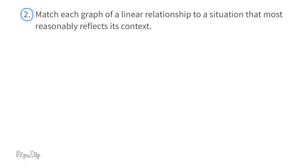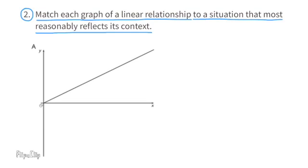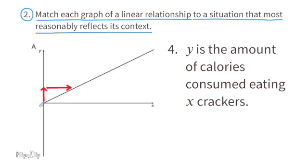Problem number two: match each graph of a linear relationship to a situation that most reasonably reflects its context. Graph A has a y-intercept at the origin and a positive slope. I'll match this with situation number four: y is the amount of calories consumed eating x crackers. The more crackers you eat, the more calories you consume.